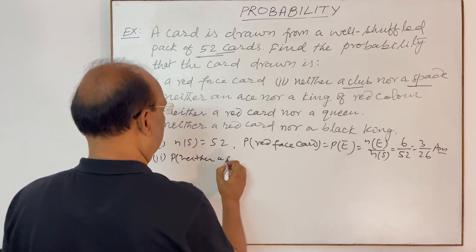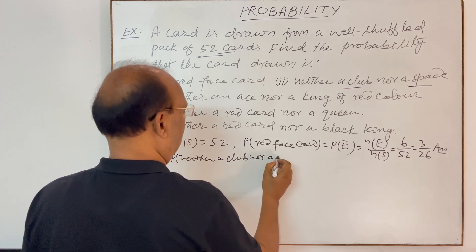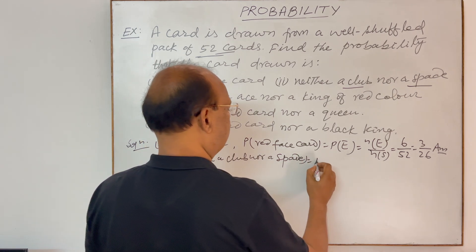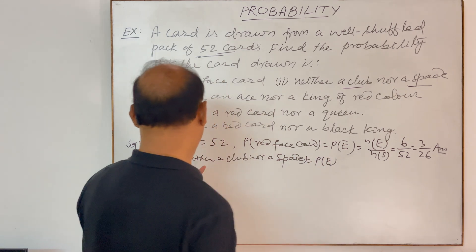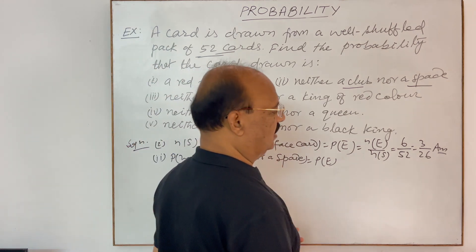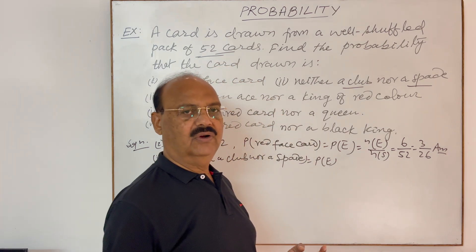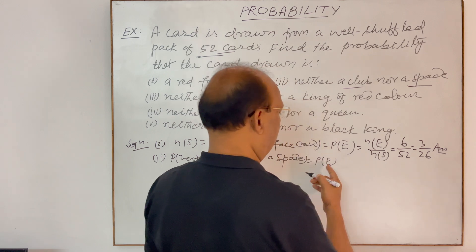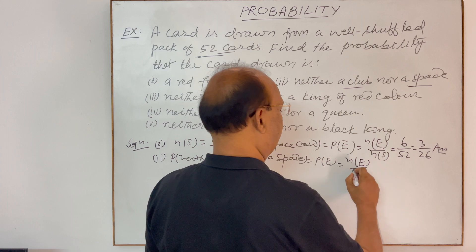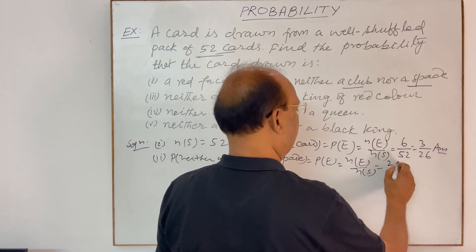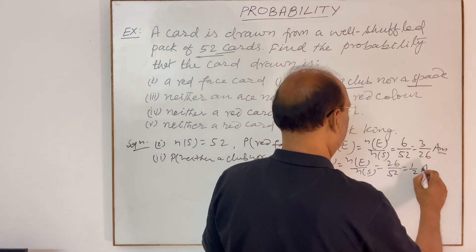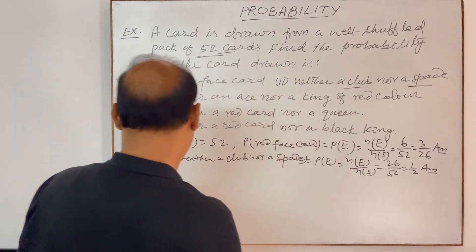For neither a club nor a spade, the remaining 26 cards will be there — 13 from diamond and 13 from hearts. Using the formula n(E) divided by n(S), n(E) will be 26 and n(S) will be 52. This gives 1 by 2. This is the answer.